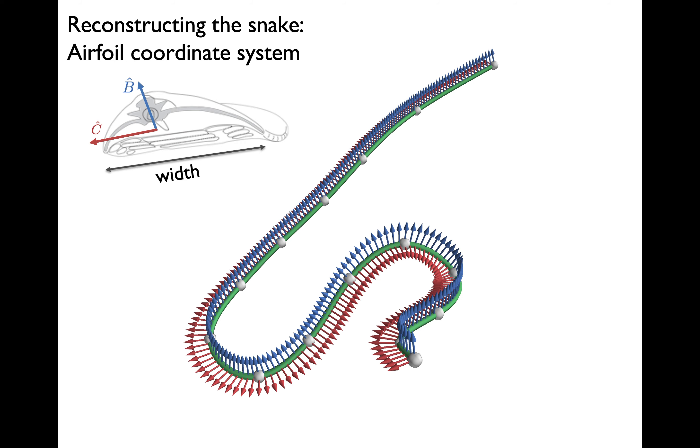Using the tangent vector, we overlay an airfoil coordinate system that defines the wing of the snake. We take the width of the animal as the cord of the airfoil, which gives us the cord line direction shown in red. And also, this defines the direction of the top of the animal, shown in blue.